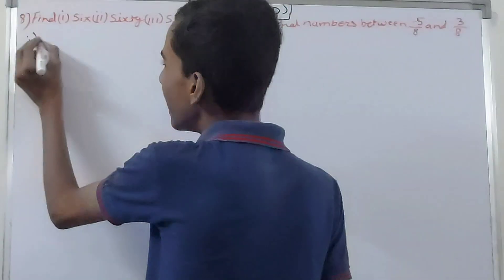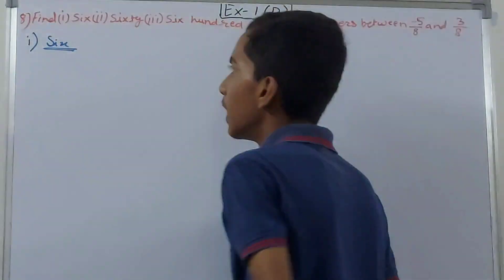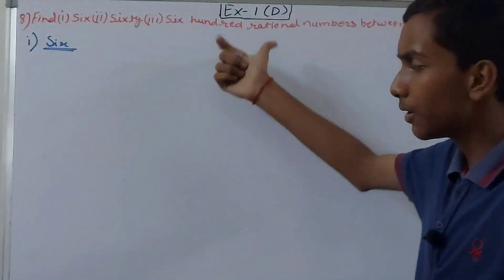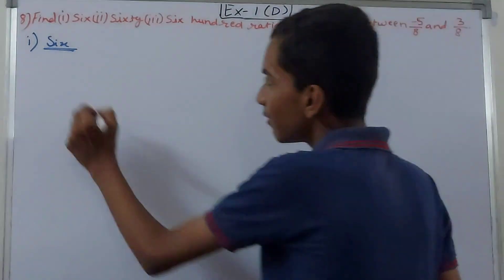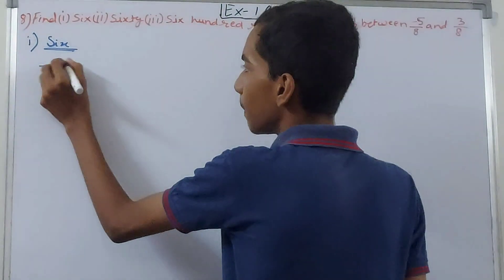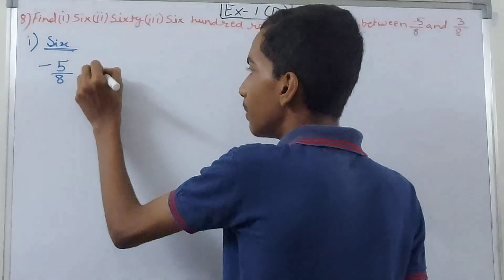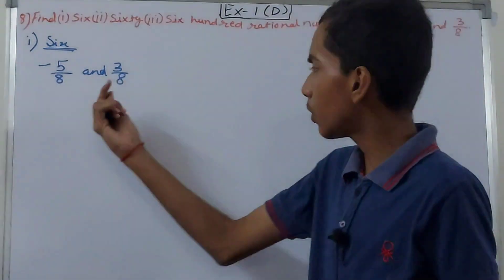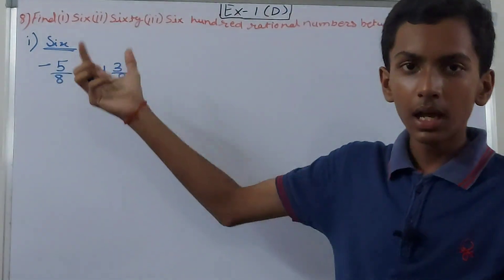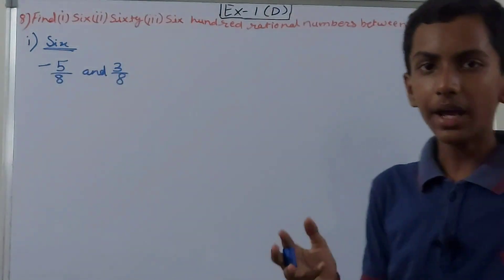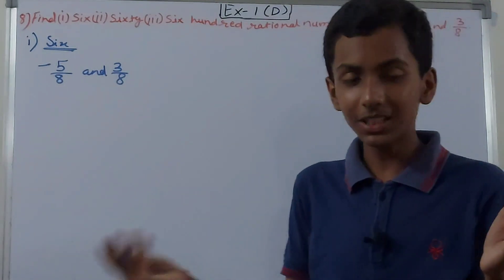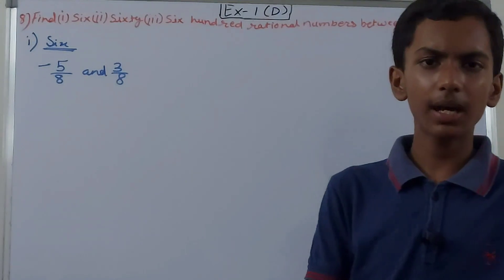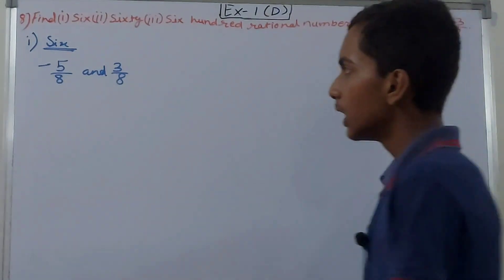First we will find the 6 rational numbers, then 60, then 600. We have -5/8 and 3/8. The denominator is already 8, so we can easily see the numbers between them. Between -5/8 and 3/8 we get: -4/8, -3/8, -2/8, -1/8, 0/8, and so on.